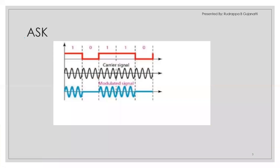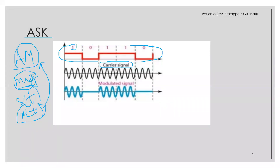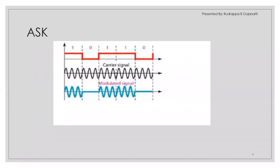Let us start with ASK — amplitude shift keying. In analog amplitude modulation, the carrier signal's amplitude is modulated based on the message signal. Previously the message signal was represented as s(t) or x(t), which is a continuous signal, so AM falls under analog modulation. In ASK, the message signal is digital in nature, so because it is a digital signal we term it digital modulation, since we are modulating the carrier using digital data.